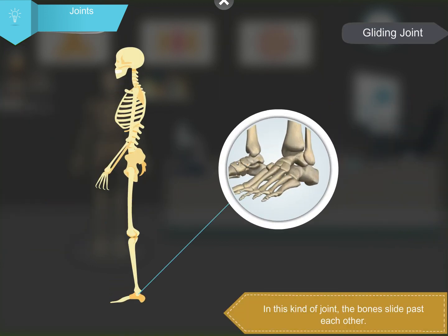In a gliding joint, the bones slide past each other. Gliding joints are present in the ankles, wrist and the vertebrae of the backbone.